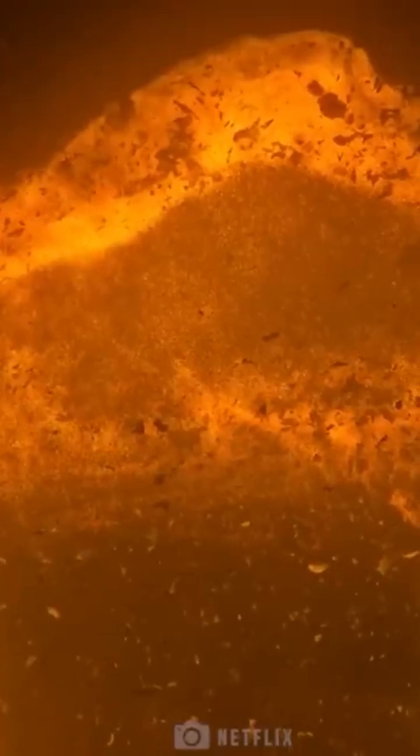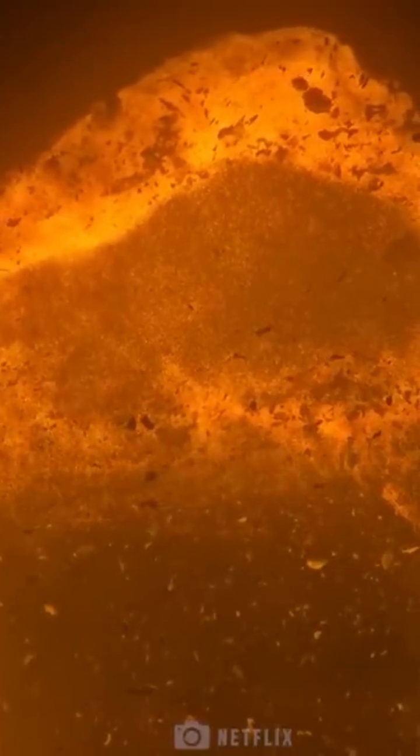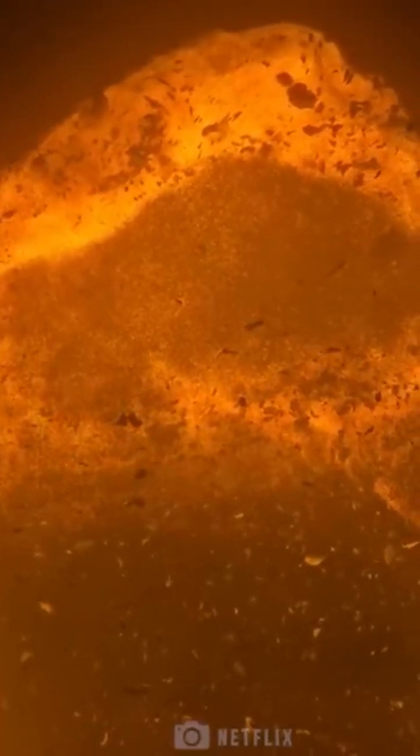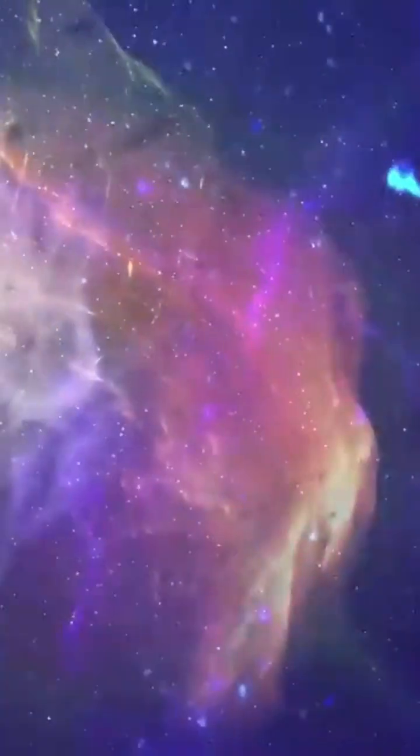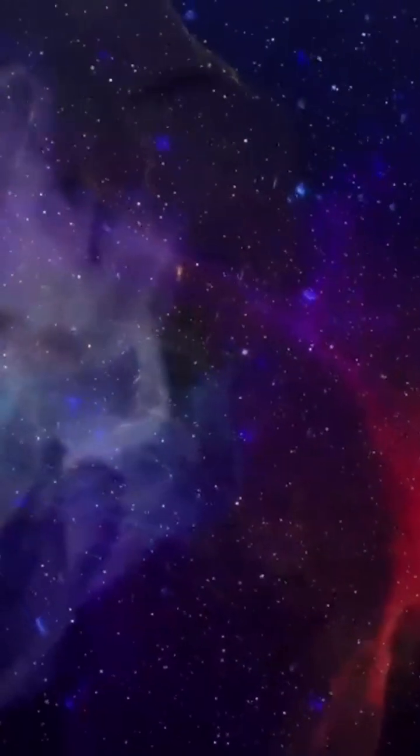The equatorial ring, which was produced from debris expelled tens of millions of years before the supernova explosion, has brilliant hotspots that developed when the shockwave from the supernova impacted the ring.